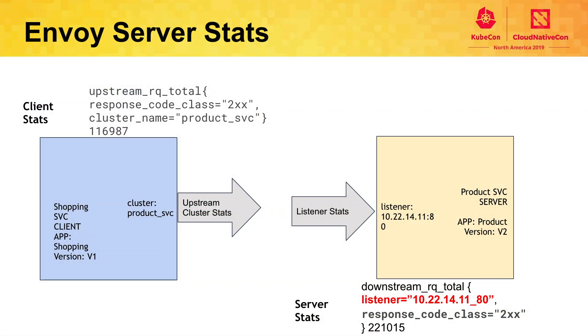Istio uses Envoy as the basis of its service mesh, and Envoy has some fairly good stats collection already. However, one part that it lacks is peer awareness. Knowing who called me is extremely important when we're talking about microservices.